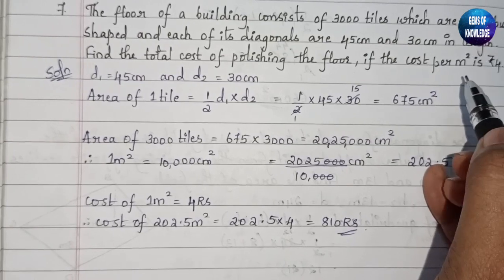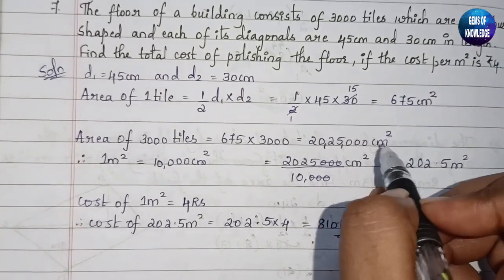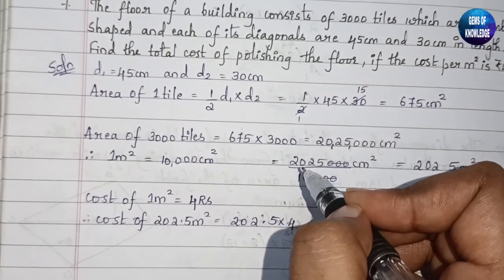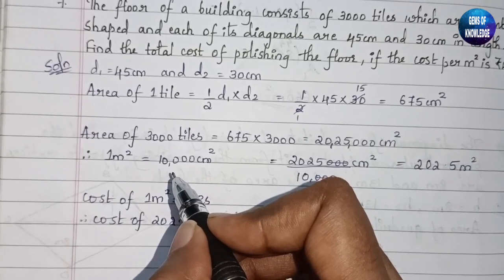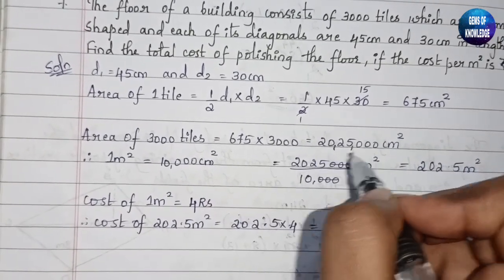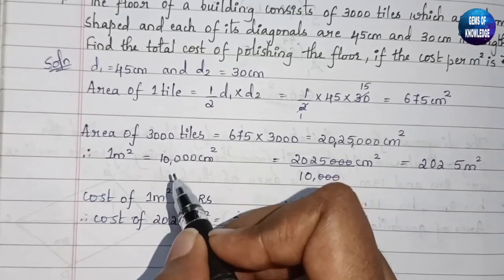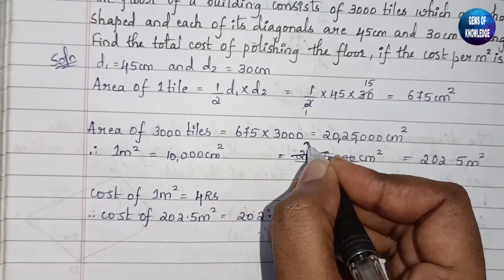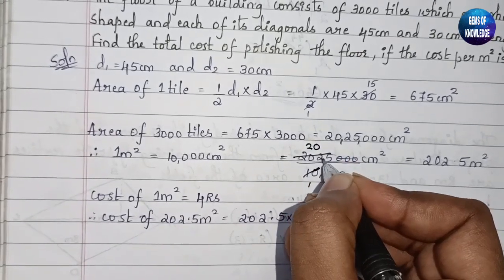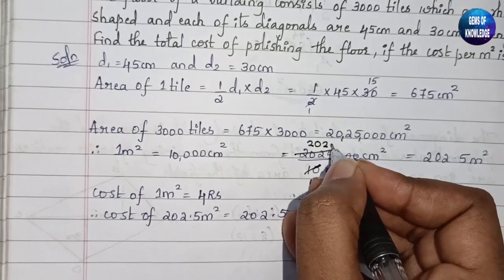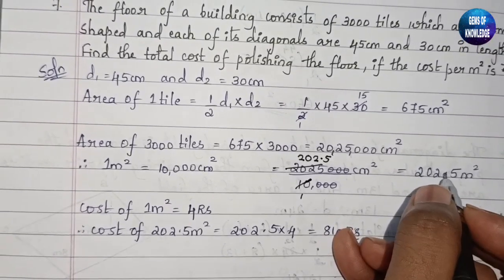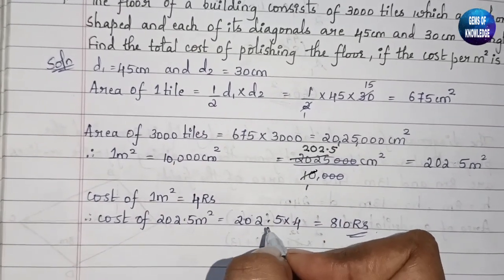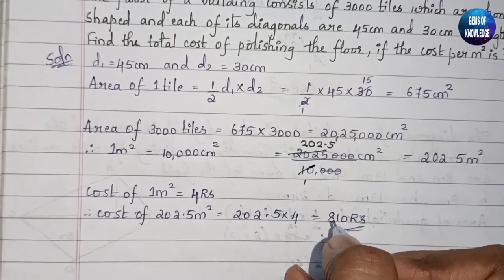We got 20,25,000 centimeter square, but the cost is given per meter square. Since 1 meter square = 10,000 centimeter square, we divide: 20,25,000 divided by 10,000 equals 202.5 meter square. Cost of 1 meter square is rupees 4, so total cost = 202.5 into 4 = rupees 810.